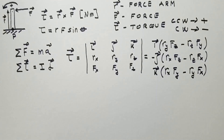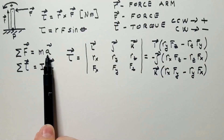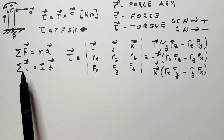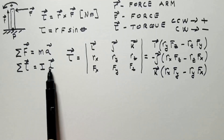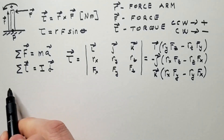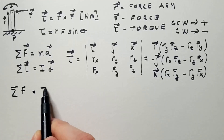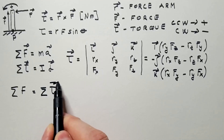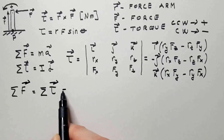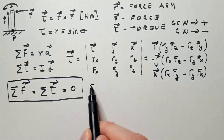In wind engineering, we are interested in statics. Statics means that the sum of all forces does not result in acceleration, and the sum of all torques does not result in angular acceleration — rather, they both sum to zero. So the sum of all forces and the sum of all torques are each equal to zero. This is statics.